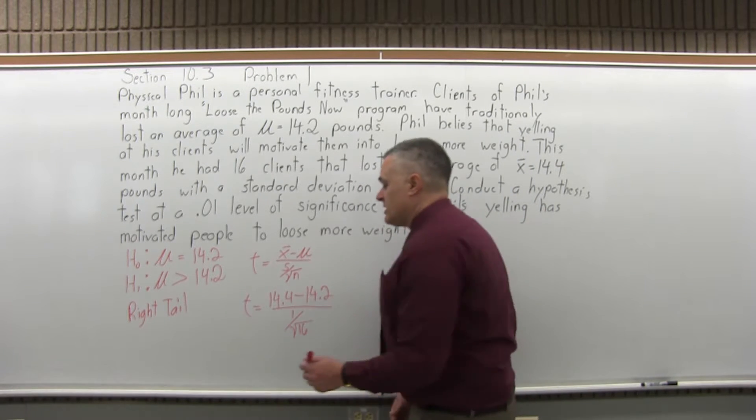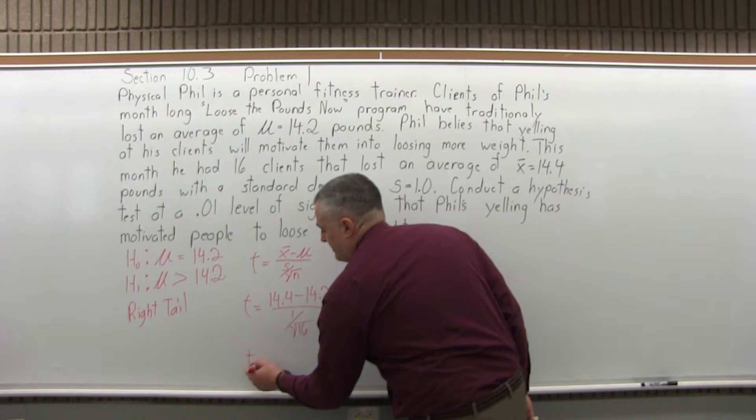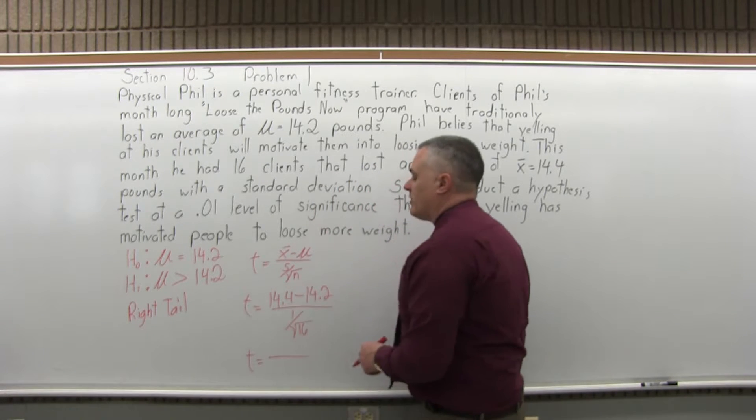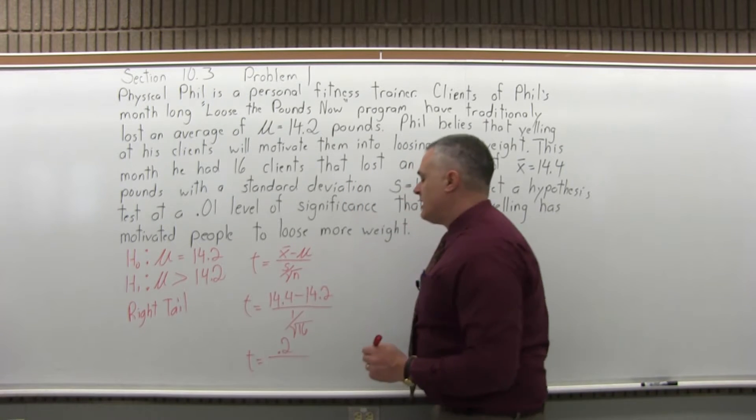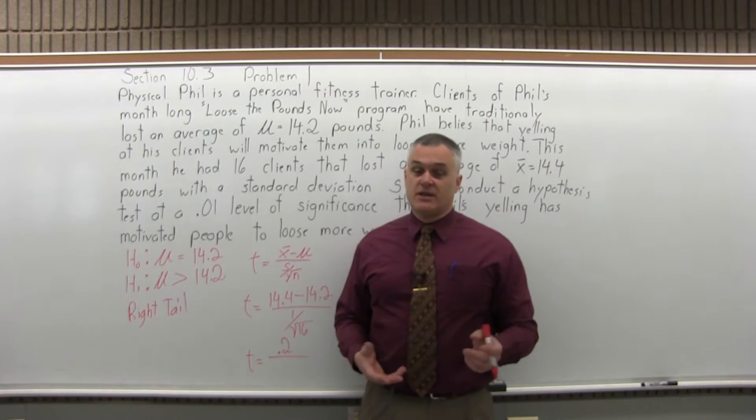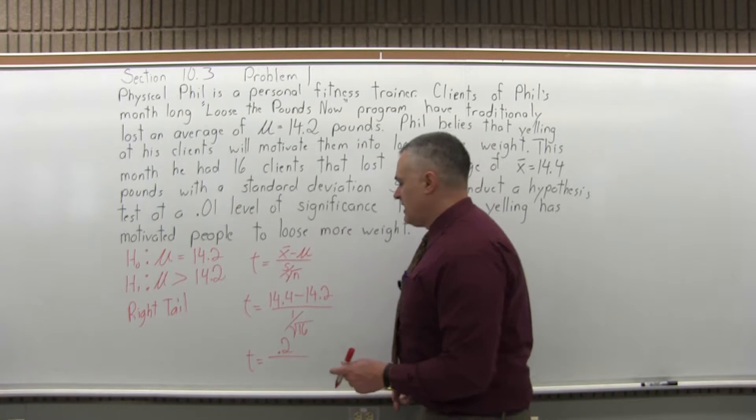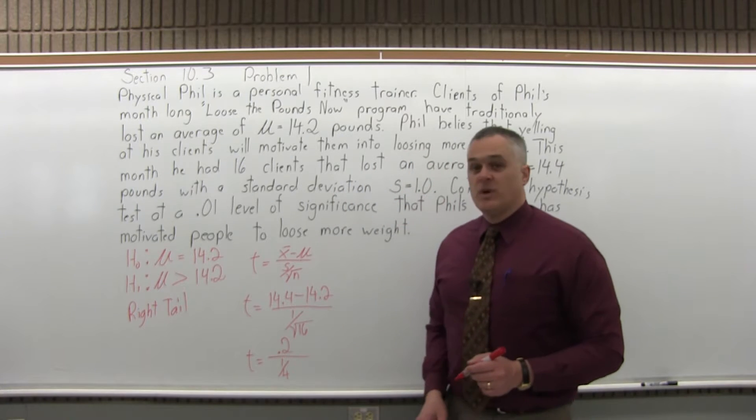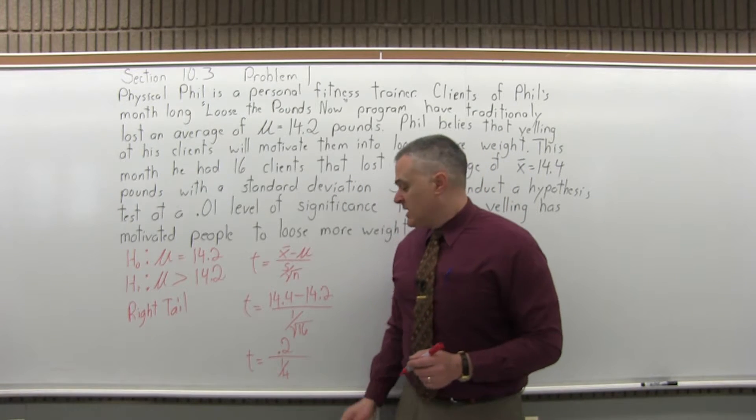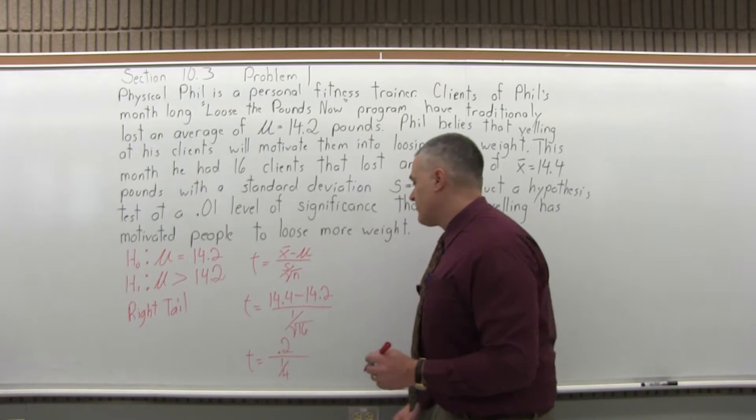So let's start the computation. T equals, in the numerator, 14.4 minus 14.2 will be positive 0.2. Don't lose track of the sign. It could be negative. In this case, it's positive. And you will have 1 over square root of 16 is 4, right? Because 4 times 4 is 16. I can simplify the denominator a little bit further.